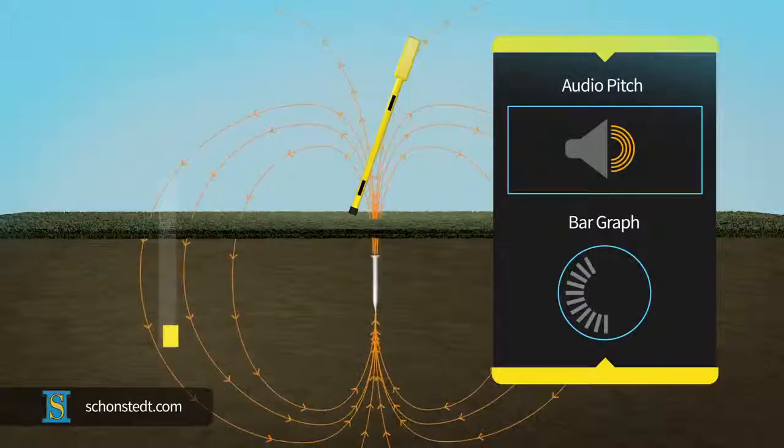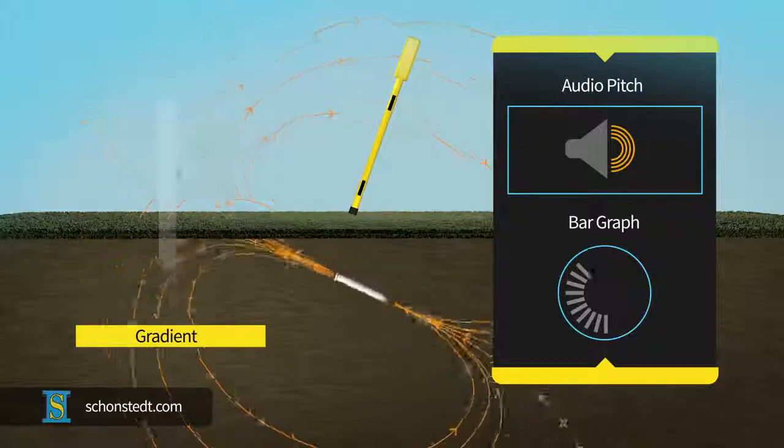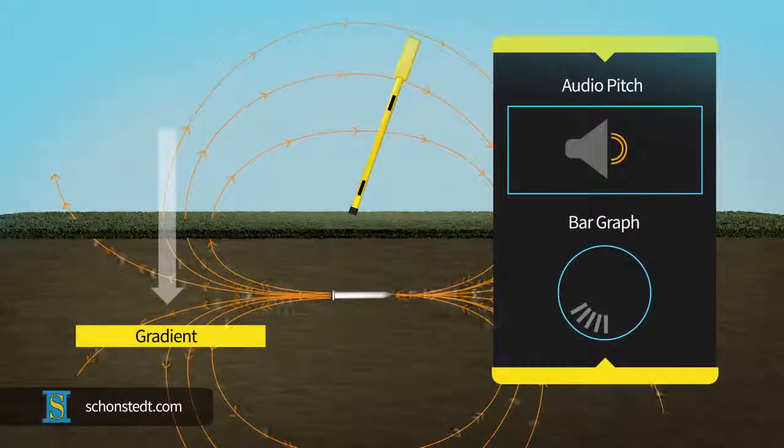The size of the buried object has an impact on the size of the magnetic field difference, or gradient. Likewise, the orientation of the buried object also has an effect on the size of the gradient detected.